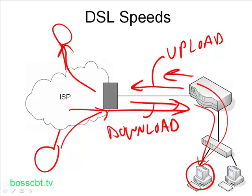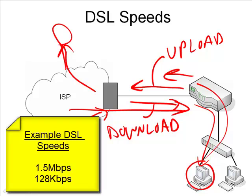Some of these speeds can vary — on an asymmetric circuit, for example, from 1.5 megabits per second download to 128K upload. You can see the up and down can vary quite significantly on an ADSL circuit, whereas with a symmetric circuit it would be, for instance, 1.5 megabits in both directions.